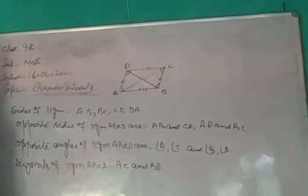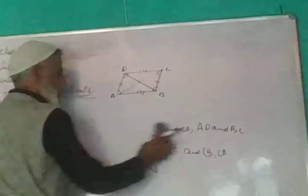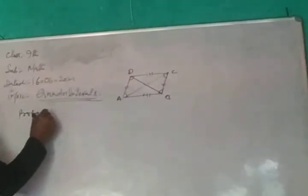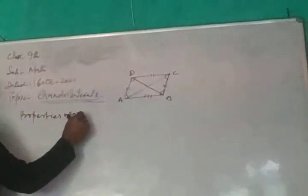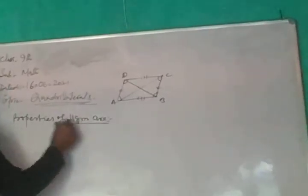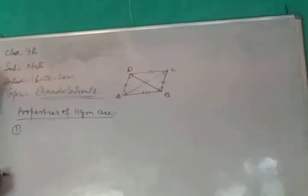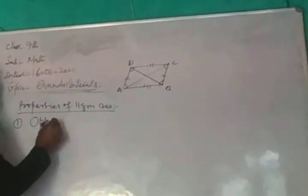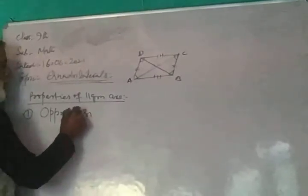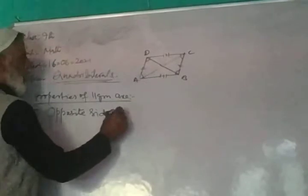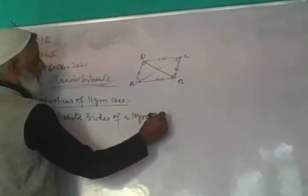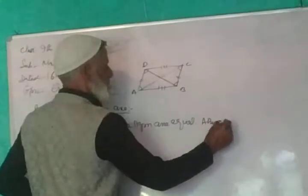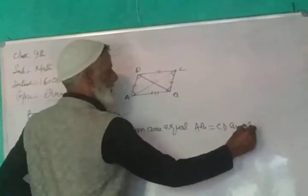What are the properties of parallelograms? Property number 1: opposite sides of a parallelogram are equal. AB is equal to CD and AD is equal to BC.